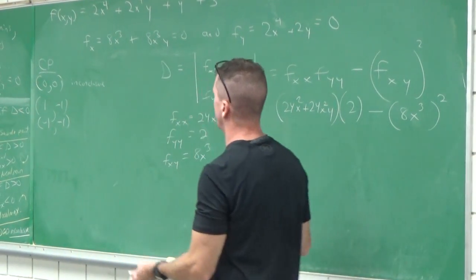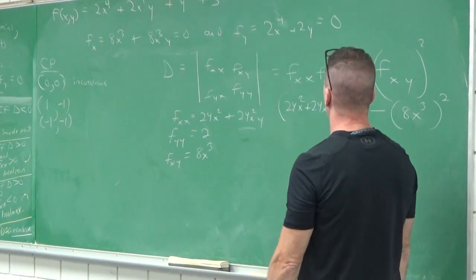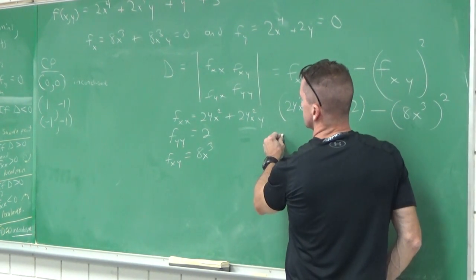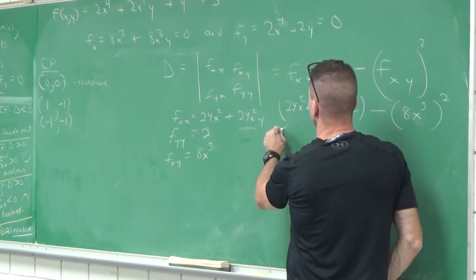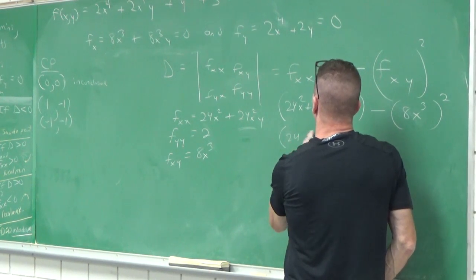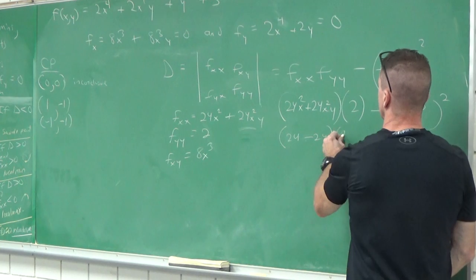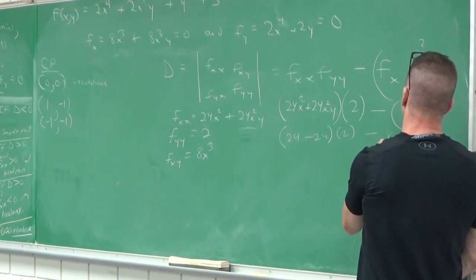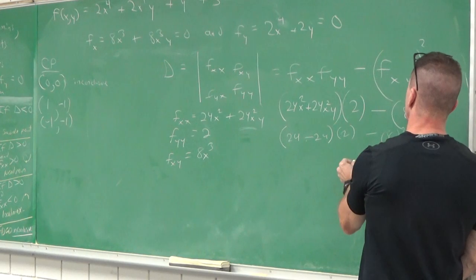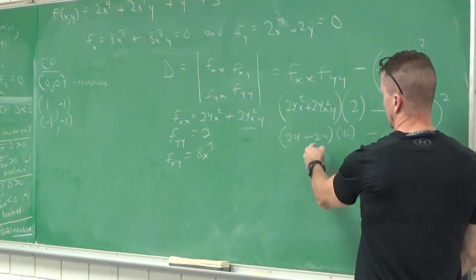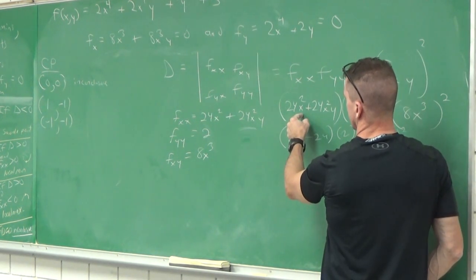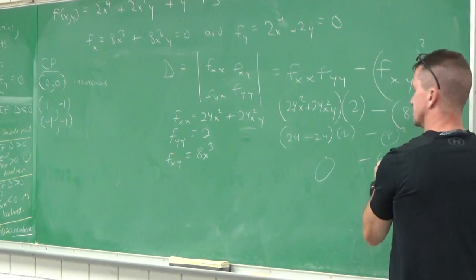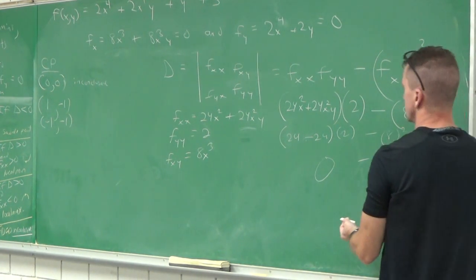How about (1,-1)? At (1,-1), I get 24 - 24, that turns into zero. Minus 8 cubed squared, which is 64. So 24 + (-24)(2) = 0 minus 64 = -64. It's a saddle point.